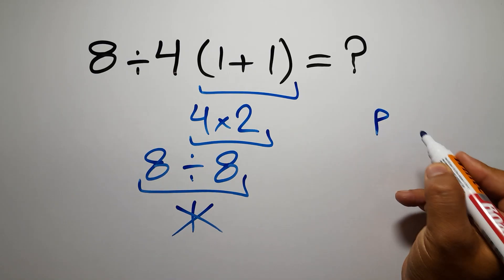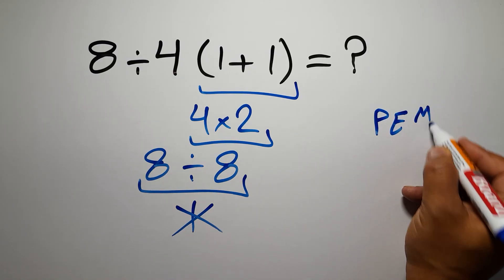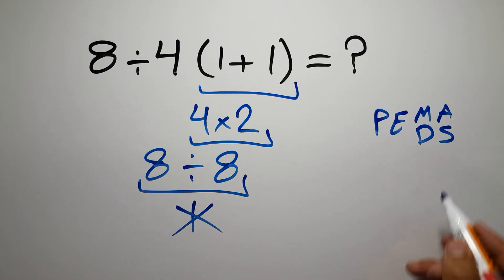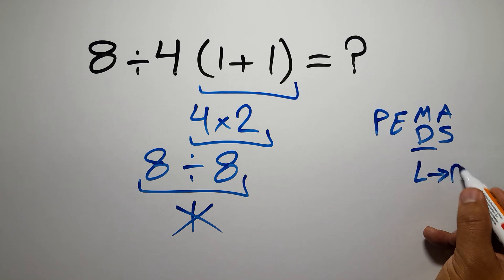first we have to do parentheses, then exponents, then multiplication or division, and finally addition or subtraction. Remember that multiplication and division have equal priority, and we have to work from left to right, and the same applies to addition and subtraction.